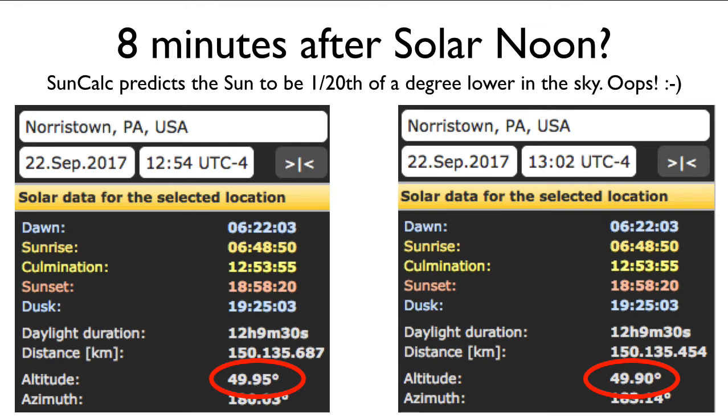Well, according to SunCalc, the sun would be actually about a 20th of a degree lower in the sky. So it shouldn't really affect things too much.